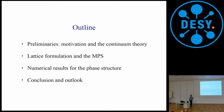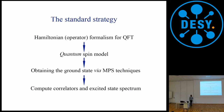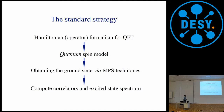Let's start from the motivation. What we are doing is we abandon the strategy of doing the path integral in lattice gauge theory calculations, and we just deal with the Hamiltonian operator. So we have to work out operator formalism for quantum field theory, then write it as a quantum spin model, and then use techniques such as MPS or DMRG to get the ground state. Once we have the ground state, we can compute all the correlators, get a spectrum, and so on.